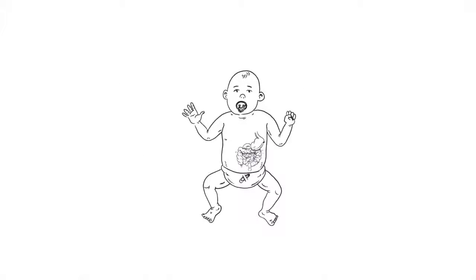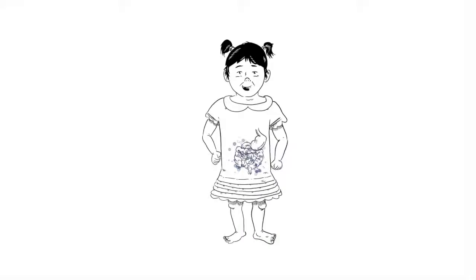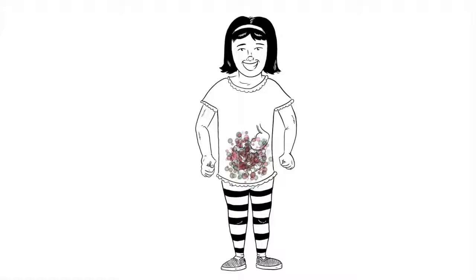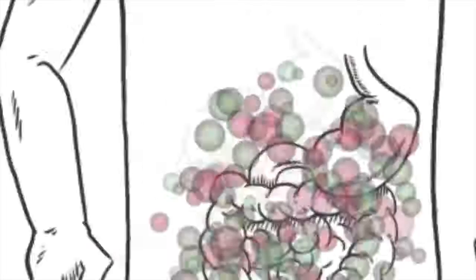From the day we are born, our microbiome evolves quickly and reaches maturity during the first two to five years. After that, it stabilizes, resembling that of an adult.